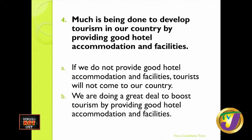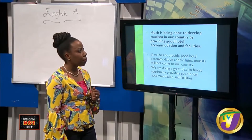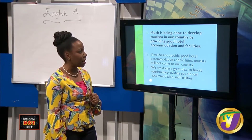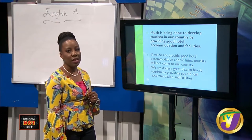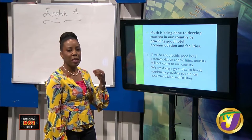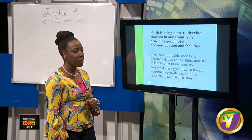Let's look at number four, where we examine tense — sometimes the tense of the options causes them to be incorrect. Number four says: much is being done to develop tourism in our country by providing good hotel accommodation and facilities. Let us paraphrase: much is being done — work is being done, projects are being executed — in the tourism sector in order to provide good hotel accommodations, facilities, and rich experiences for tourists.